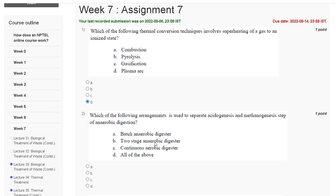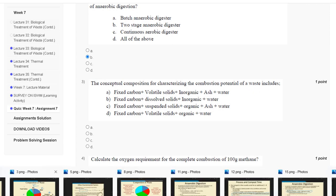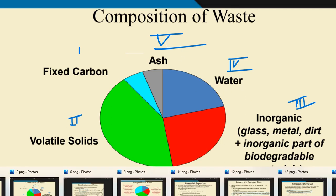Question number 3: the conceptual composition characterizing the combination potential for a waste includes carbon, volatile solids, inorganic part of biodegradable material, water, and ash. The correct answer is option A.